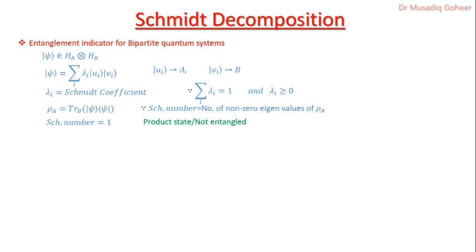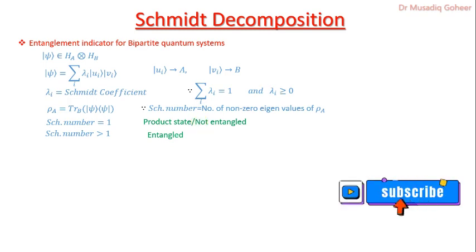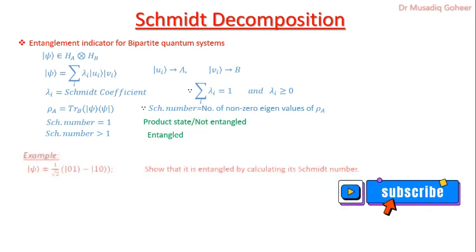The Schmidt number defines whether the state is entangled or not. If the Schmidt number is equal to one, the state is separable — a product state. If it is greater than one, the state is entangled. We determine the eigenvalues of the reduced density matrix and count how many are non-zero: if that count equals one the state is not entangled, if greater than one it is entangled.